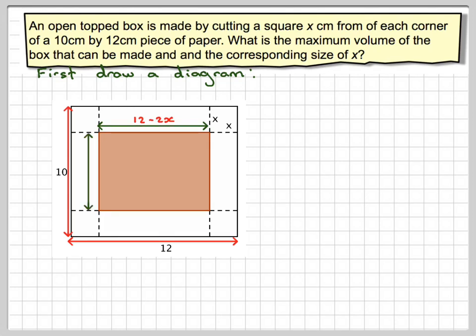Similarly, if this is 10, this length here is going to be, and this length here is x, this length here is x. This is going to be 10 minus 2x.